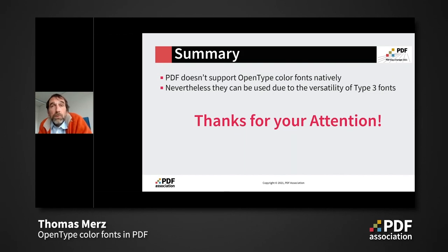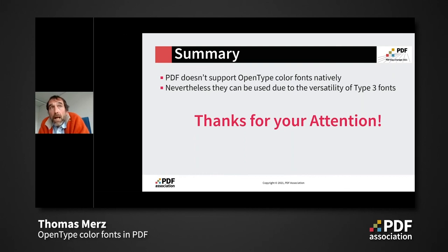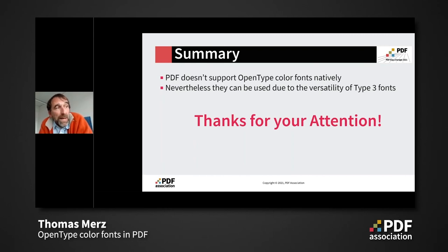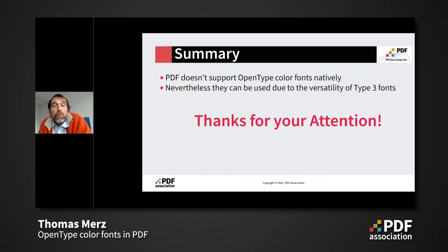Question: you said these color fonts are sRGB — how do you specify this, using ICC, Cal RGB, or something else? Actually, part of the OpenType specification explicitly says that the RGB values must be interpreted in sRGB. From there it's up to the application how to implement it — so if you produce PDF using this font, you must reference or embed the sRGB color profile.